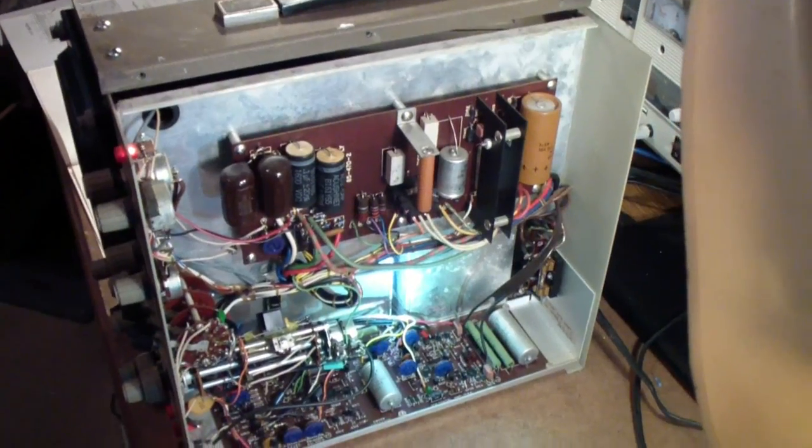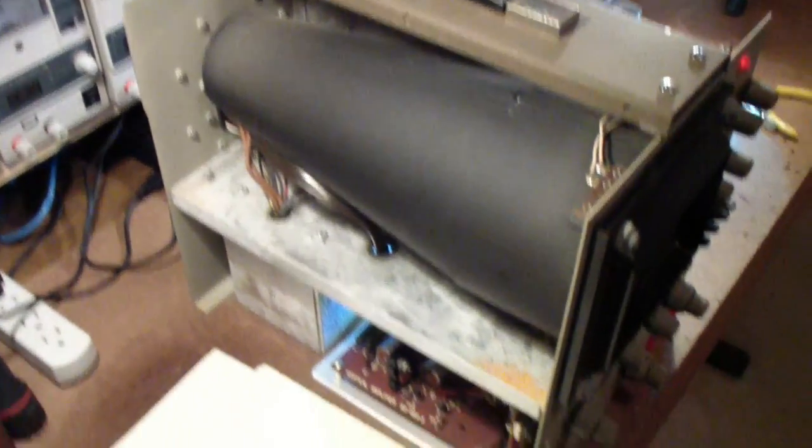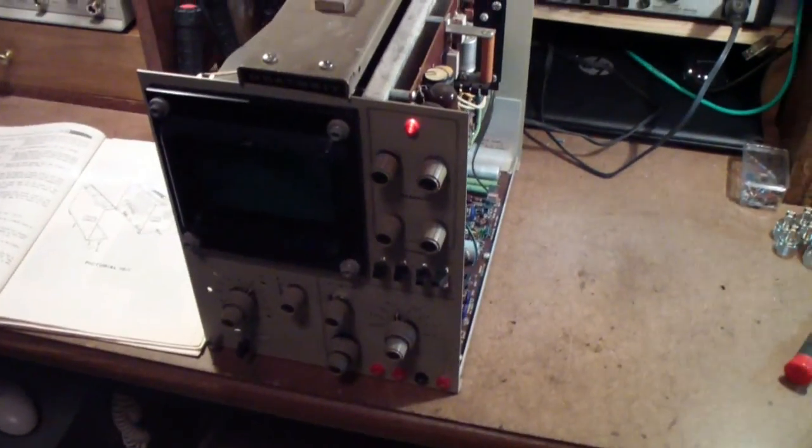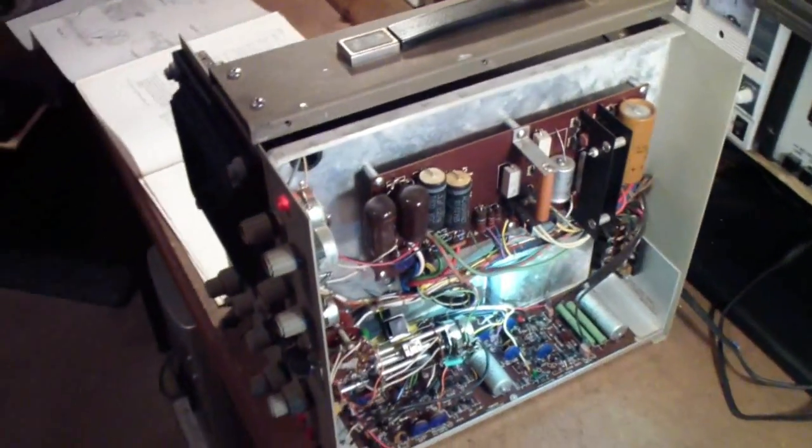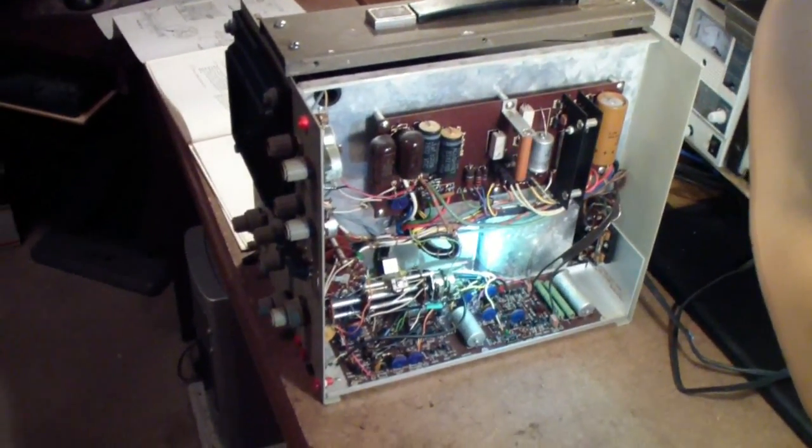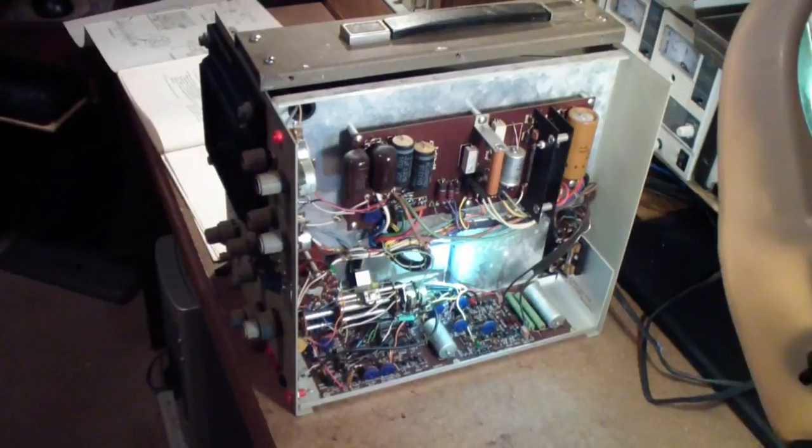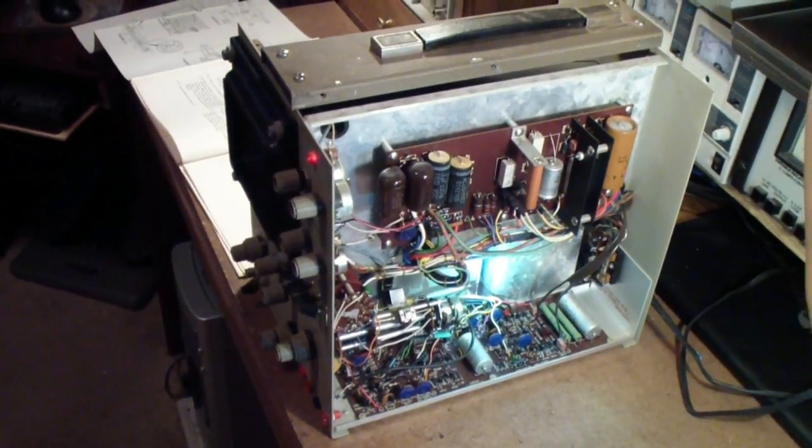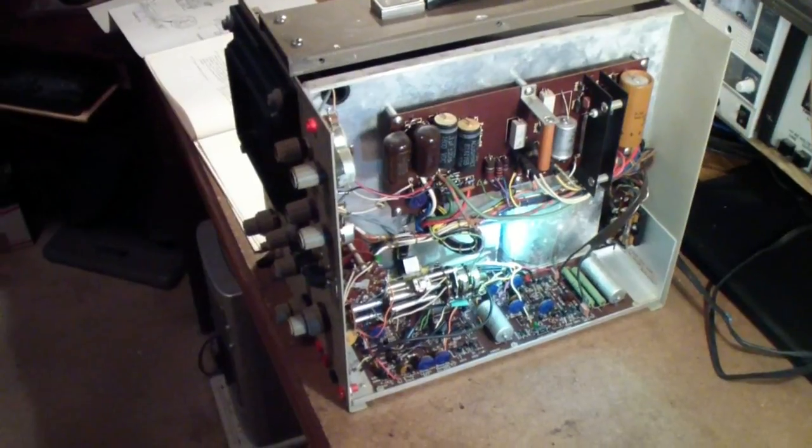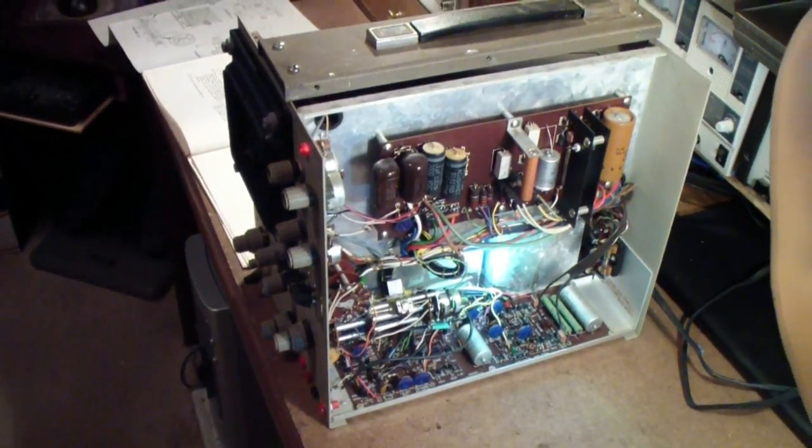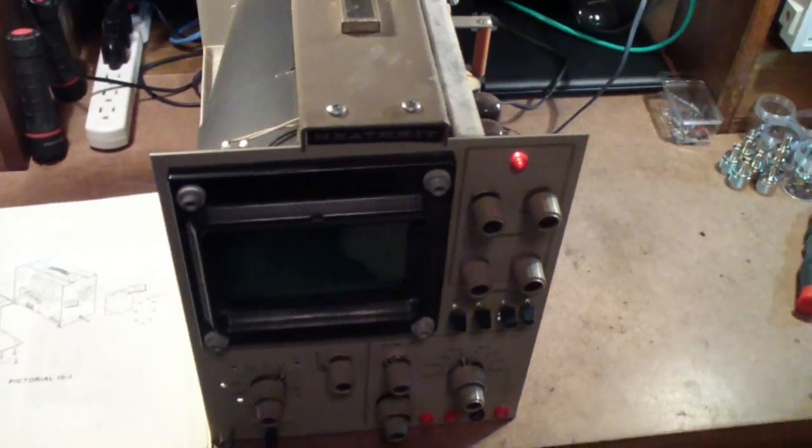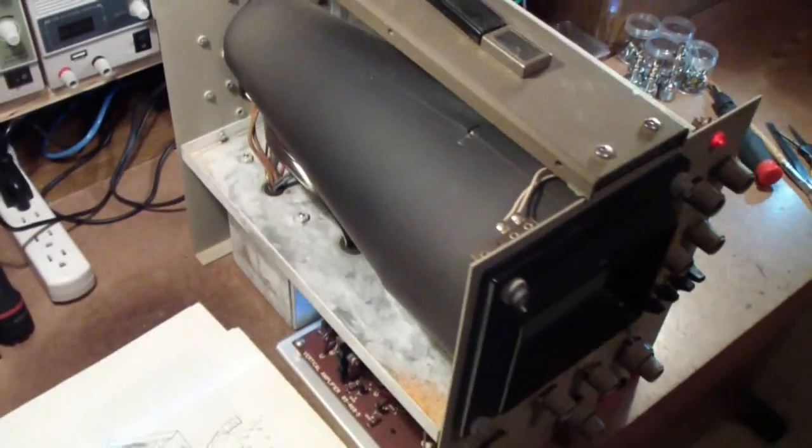Here's the Heathkit oscilloscope opened up for calibration. I've done some basic tests to make sure that the unit appears to be working correctly. It's been years since I've used this scope. But I hope to be able to calibrate it and get it back to its normal operating condition and include it in the vintage oscilloscopes series. This was the first triggered sweep oscilloscope that I owned. Before this, I had an EICO 460 that I built in the late 50s. I built this kit in 1971.